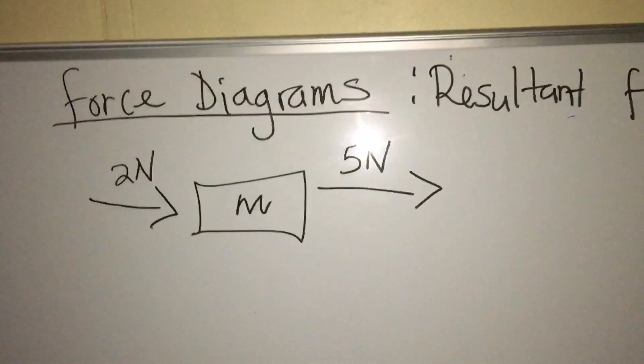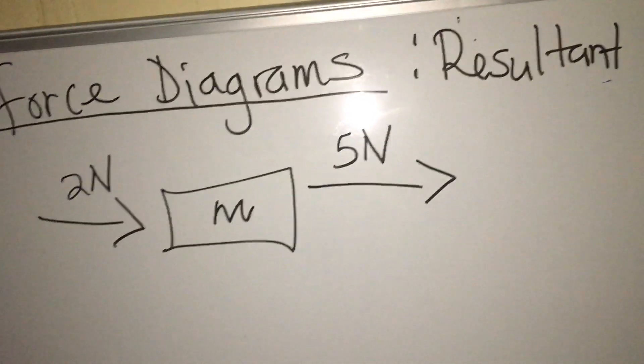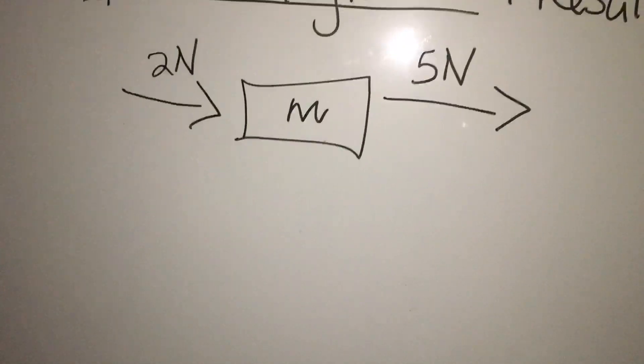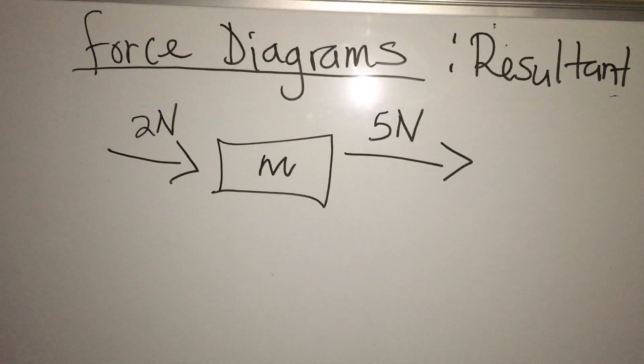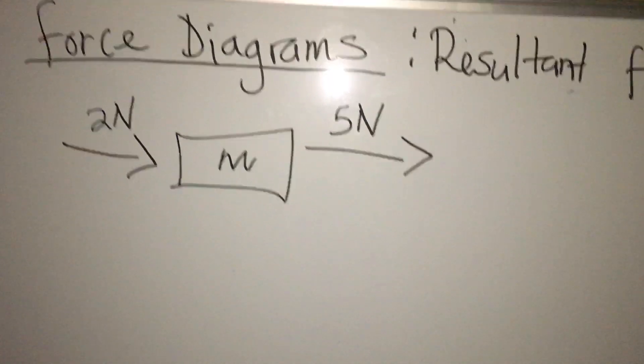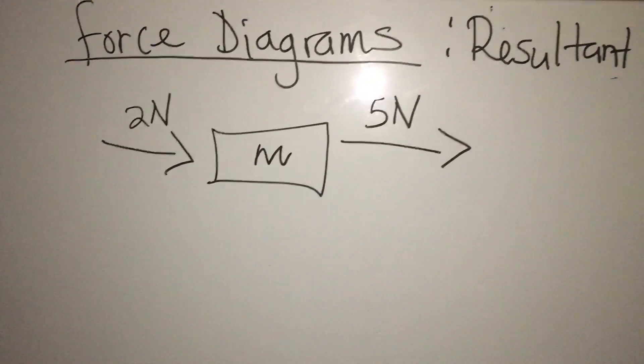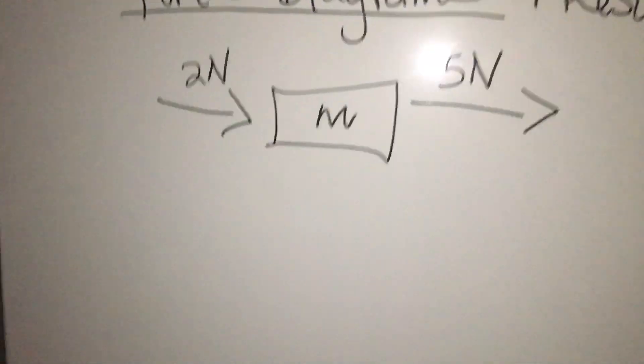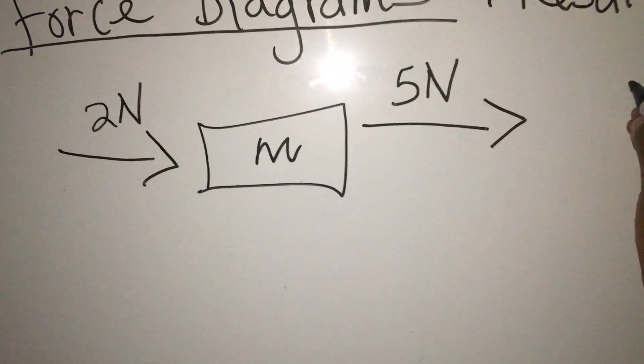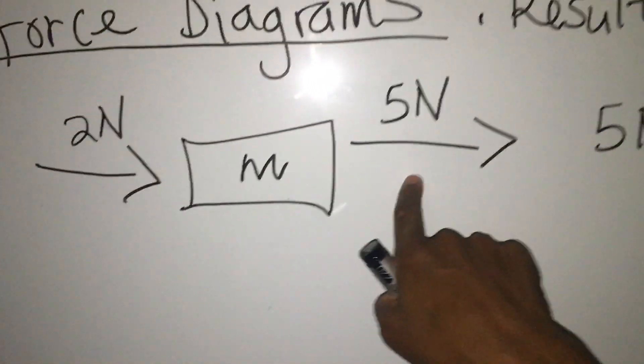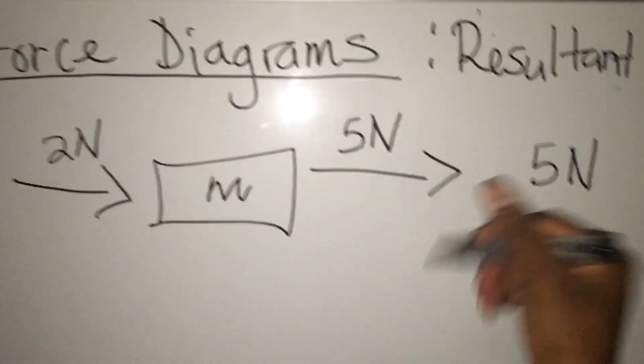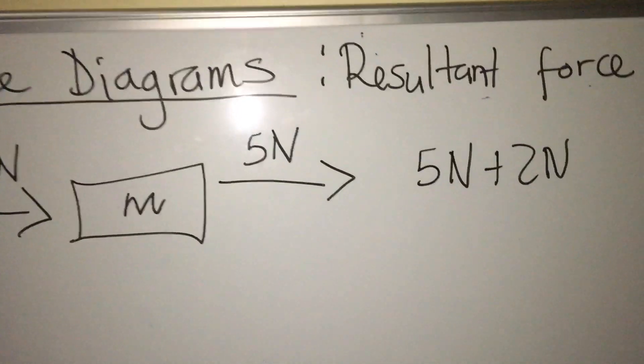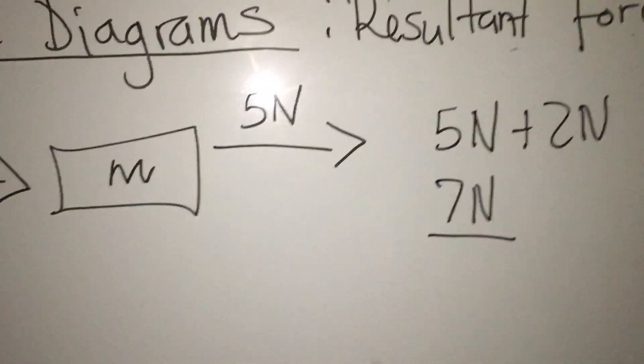You have two newtons going that side and your five newtons pulling that side. Remember, if your arrow is pointing to the right side, it means it's going to give you a positive result. If it is going to the left side, it's going to give you a negative result. So in that case, you are going to start with resultant force equals five newtons - you always start calculating from the right side - five newtons plus two newtons. So you are going to have seven newtons as your resultant force.